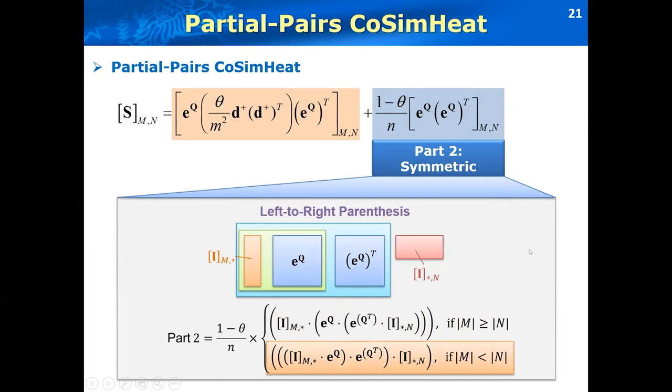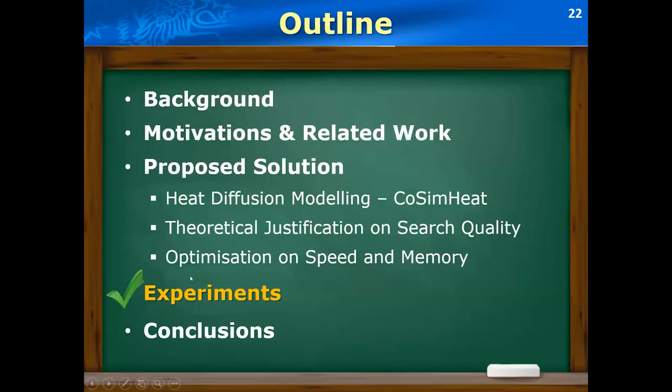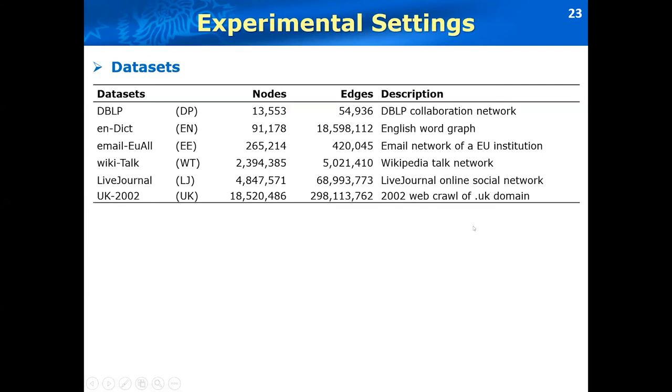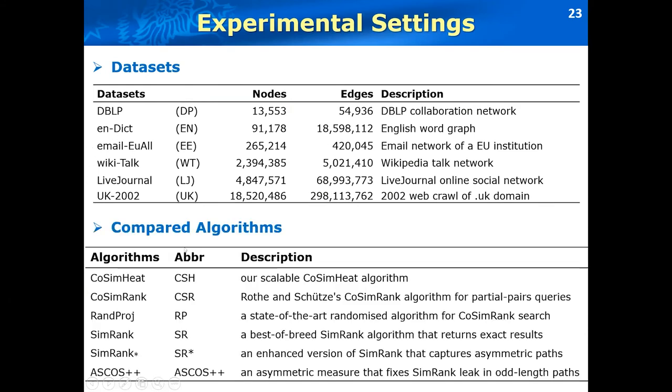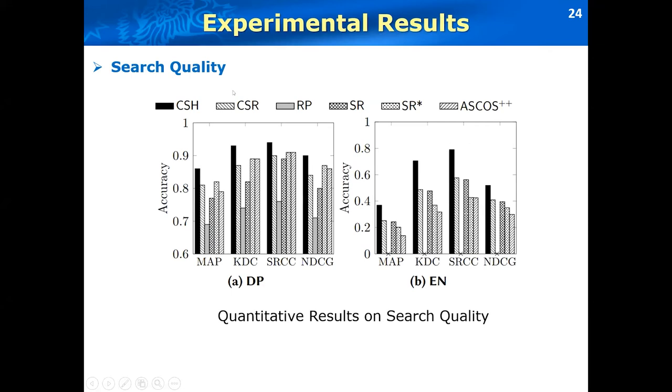Finally, we have conducted experimental results on different data sets to demonstrate the efficiency and effectiveness of our method. We first use the following data sets from the DBLP, an English word graph, and other data sets from the Stanford SNAP data set. We also compare the following algorithms. The first set of the experiment is the search quality. We use the following accuracy metrics MAP. This is Kendall Tau distance and Spearman and NDCG. These are the qualitative results on the search quality on DBLP and English word graph. We can see on each data set and each accuracy metric, the cosine heat similarity is highly effective.